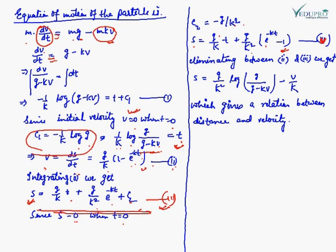Now eliminating T between equations two and four, we get S = (G/K²) log(G / (G − KV)) − V/K, which is the relationship between distance and velocity.